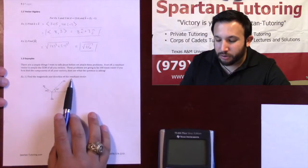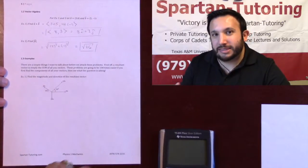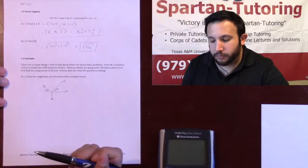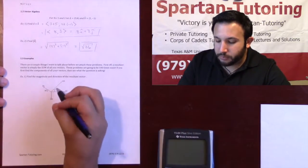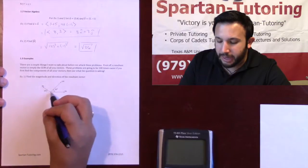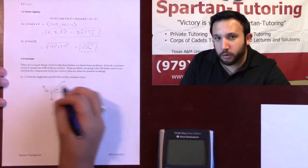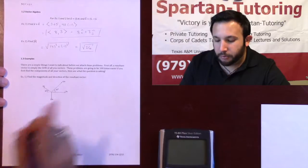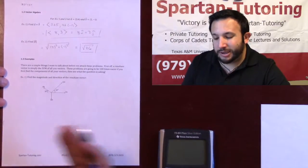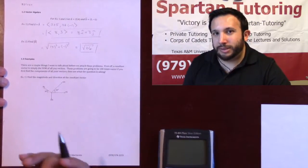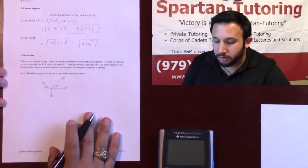The resultant vector is going to be the sum of all of your vectors. So what you're going to want to do with these types of problems is find out the x and y components for all four of these vectors. And once I find the components for all four of those vectors, we're just going to add them together, and that will give me my resultant vector. So let's go ahead and go at it.